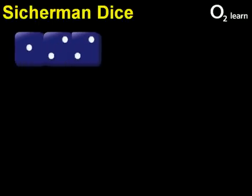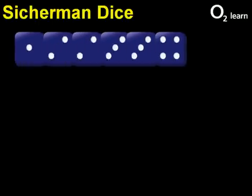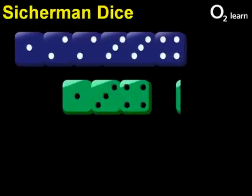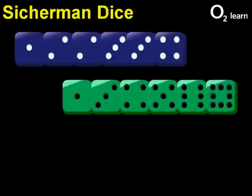Here's one for you to try. The Sicherman dice have weird numbers on them. One dice has one, two, two, three, three, and four. The other has one, three, four, five, six, and eight.